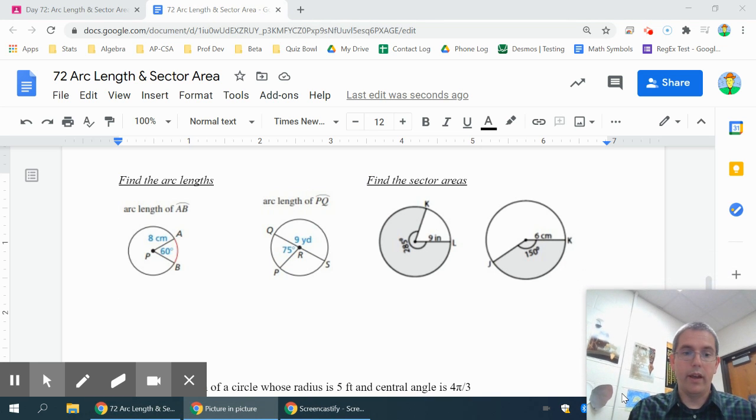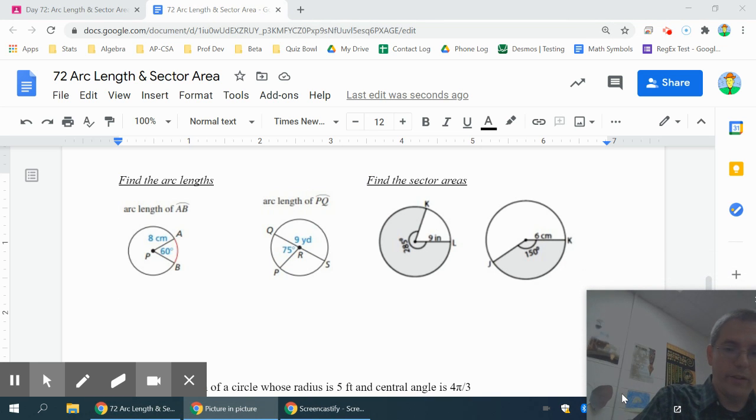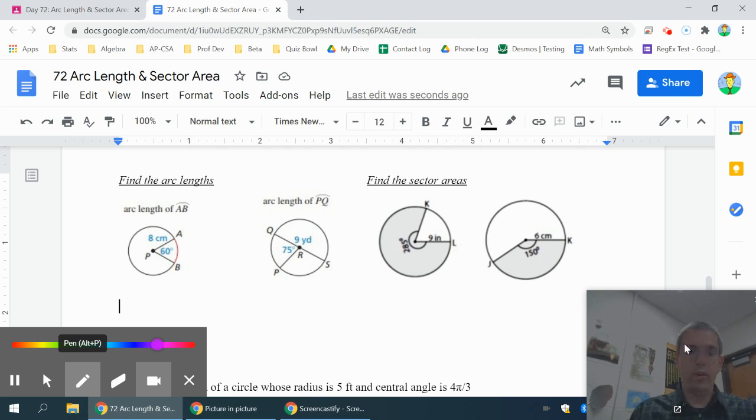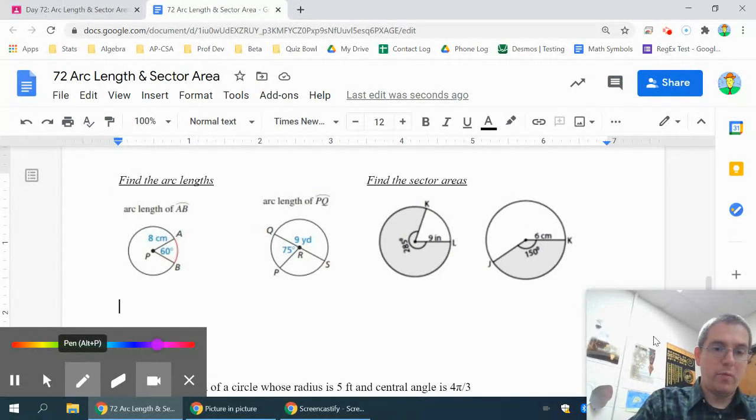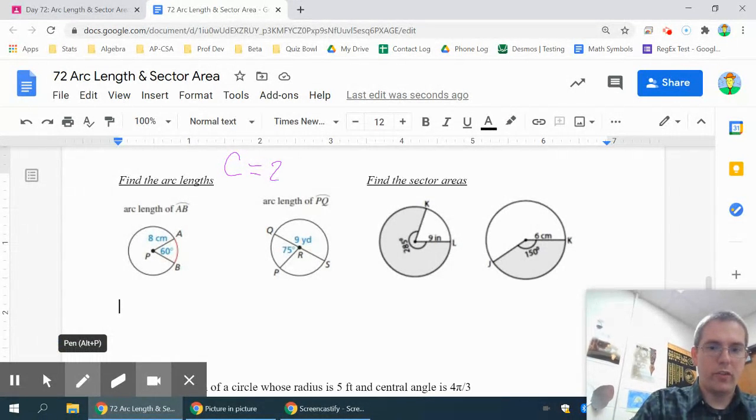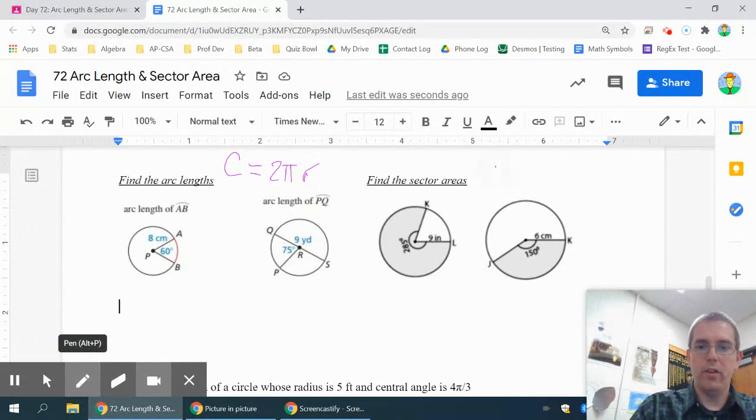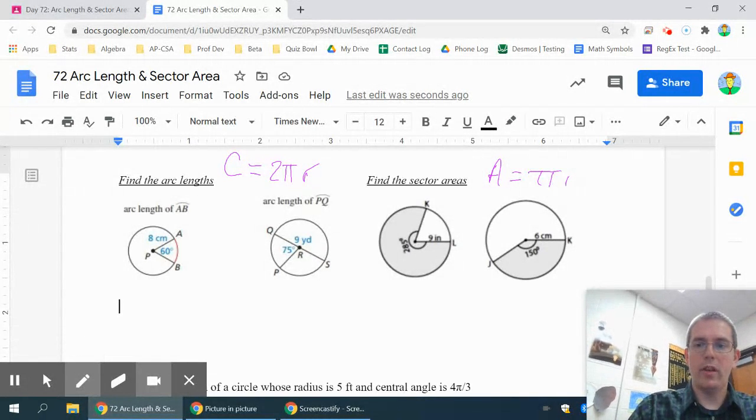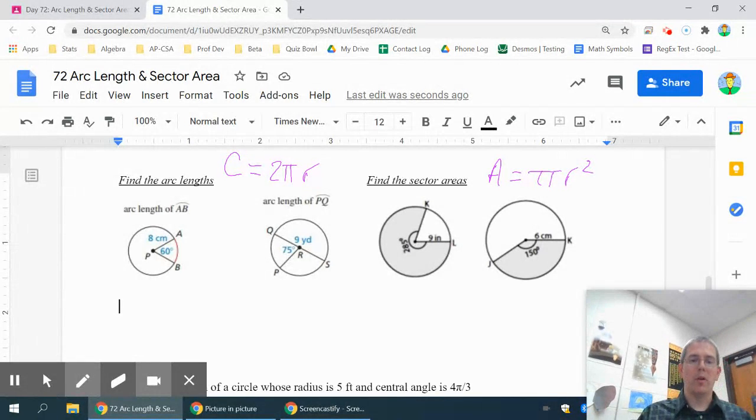Okay, we're going to be looking at arc length and sector area. So one thing we're going to need to see is anytime you have arc length, think that I need the circumference first. So that's going to be 2πr. Anytime you have sector area, think you need the area first. And the area is πr². Make sure you have those formulas down pat because you're going to use those. You'll have a few on your practice worksheet where it's just asking for circumference and area. In that case, you'll just use this first part and be done.